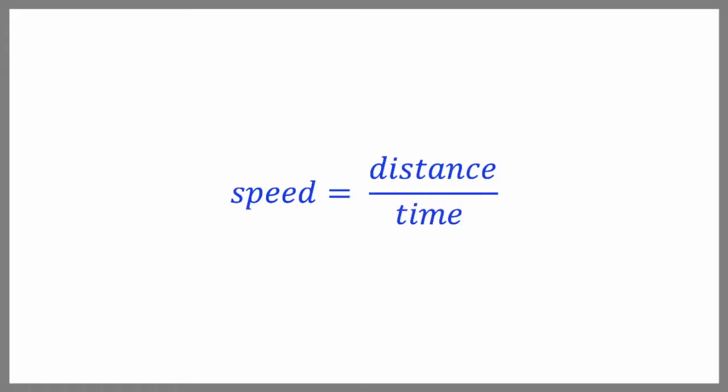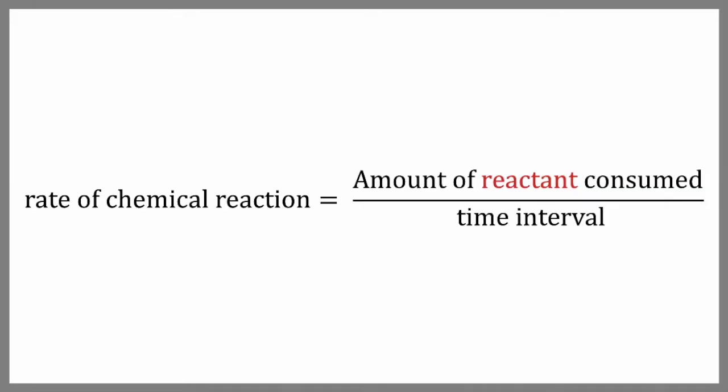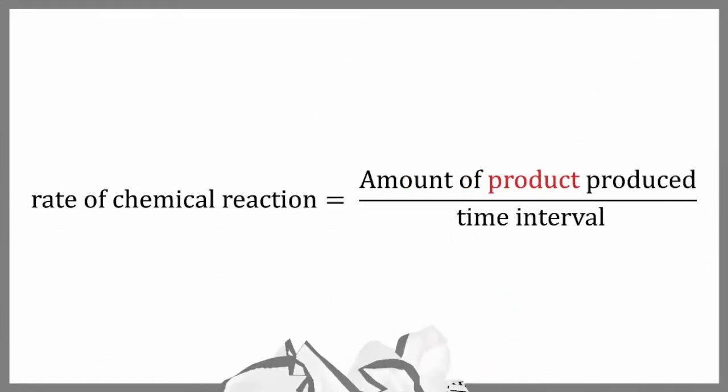We tend to measure the rate of a reaction in terms of how much reactant is being consumed or how much product is being produced in a given amount of time. Just like with the speed of a car, we can derive equations that will help us calculate rates of reaction. Sometimes we calculate rates in terms of how quickly the reactants are disappearing in a certain time period, and sometimes we calculate them in terms of how quickly the products are appearing in a certain time period.